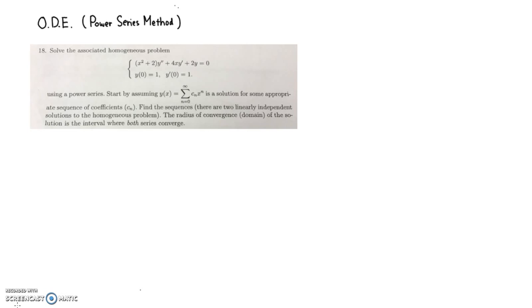Let's look at the ODE power series method, number 18. So let's solve this initial value problem using a power series method. We say that we have a solution in power series with unknown coefficient cn, which is given here.